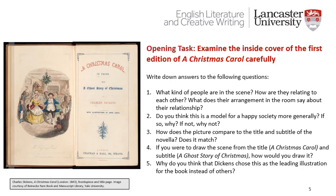For your first task, I'd like you to look at the illustration and write answers to the following questions. Number one, what kind of people are in the scene? How are they relating to each other? What does their arrangement in the room say about their relationship? Question two, do you think this is a model for a happy society more generally? If so, why? If not, why not? Question three, how does the picture compare to the title and subtitle of the novella? Does it match? Question four, if you were to draw the scene from the title A Christmas Carol and subtitle A Ghost Story of Christmas, how would you draw it? And lastly, question five, why do you think that Dickens chose this as the leading illustration for the book instead of others? Please pause this presentation now to take some time to work on this task.